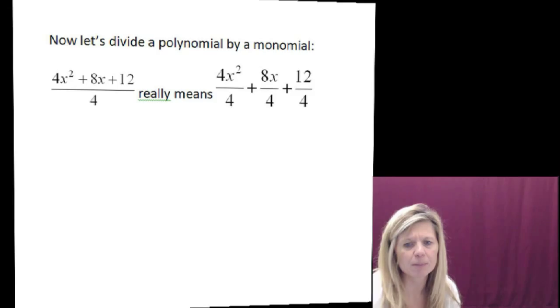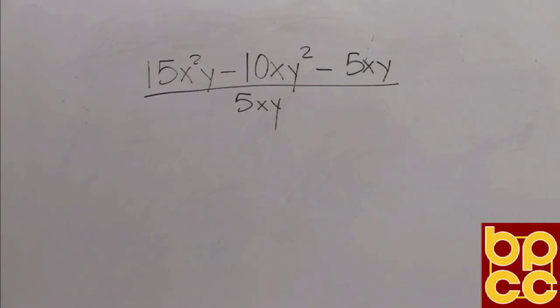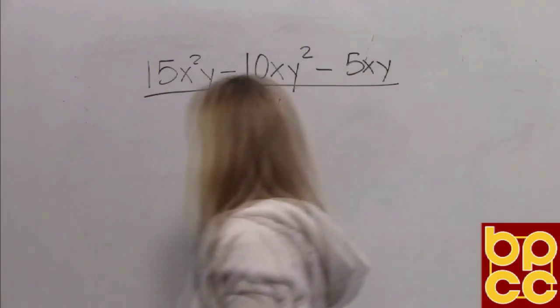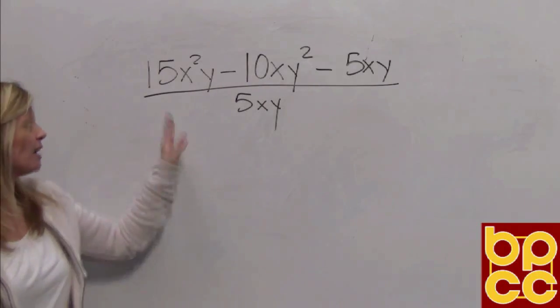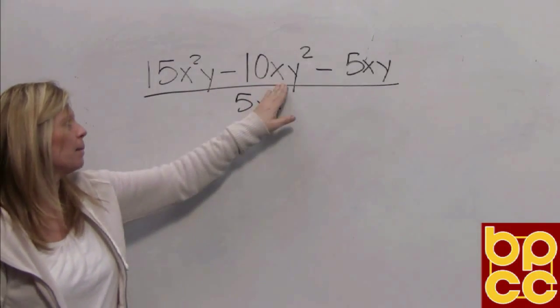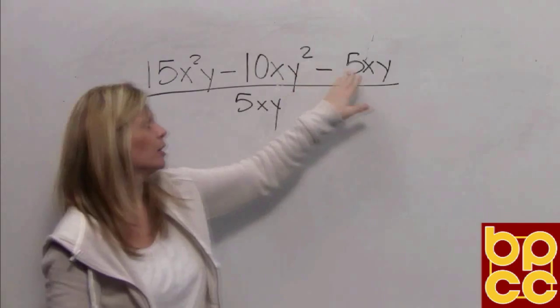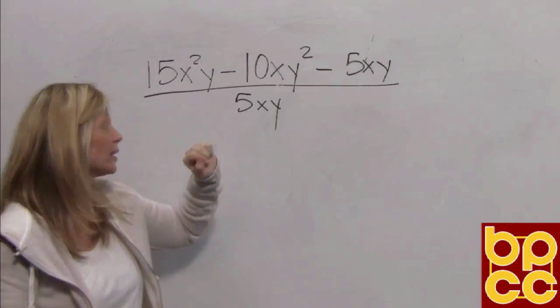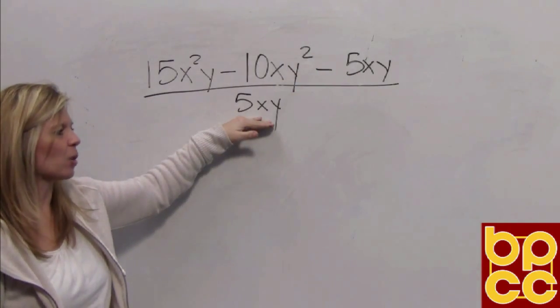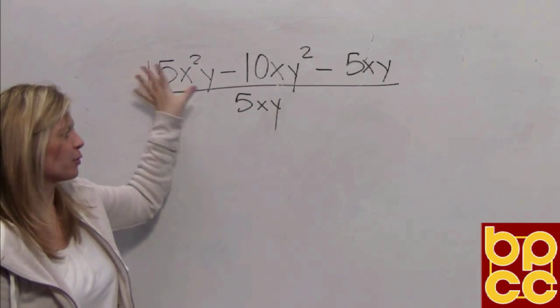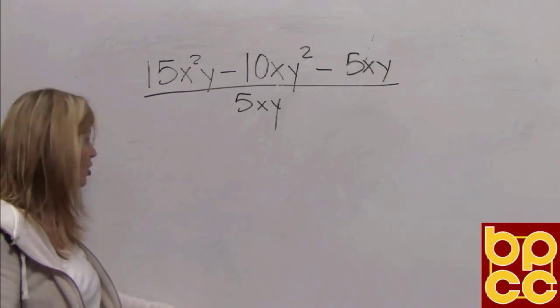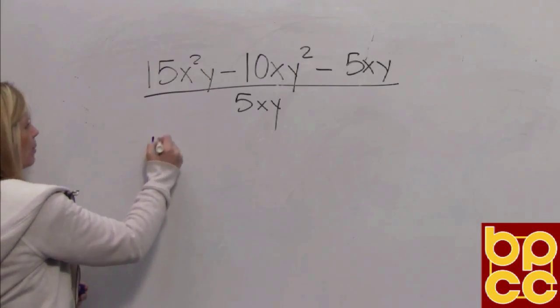Let's go up to the board and look at example 3 in your notes. I want to divide 15x squared y minus 10xy squared minus 5xy, and I'm dividing it by 5xy. Well that means we have three division problems going on here. So I highly suggest you write that as three division problems.